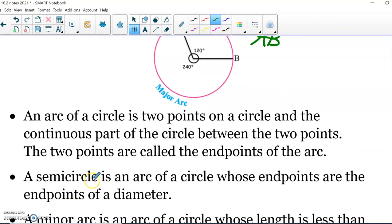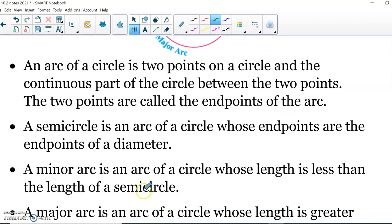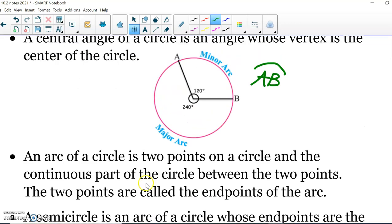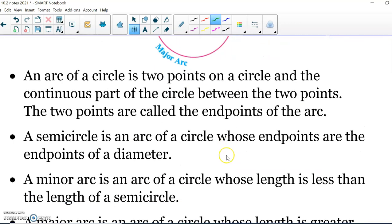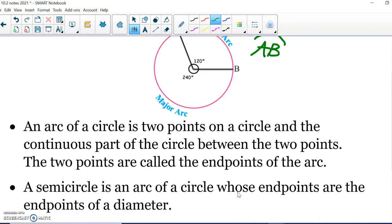If you have half of a circle, of course we call that a semicircle. So a semicircle is an arc with the endpoints on the diameter. A minor arc is less than half of the circle. So our arc AB was our minor arc. And then a major arc is an arc whose length is greater than half of the circle, greater than the semicircle.